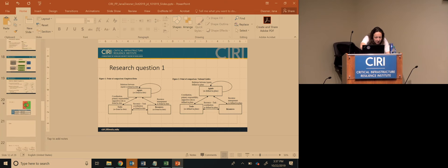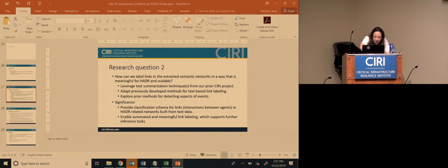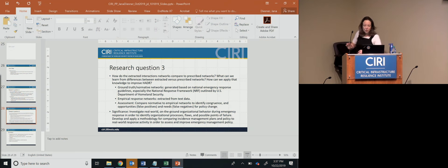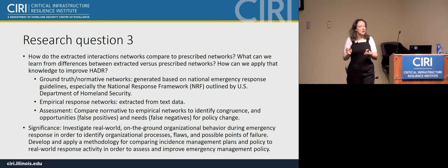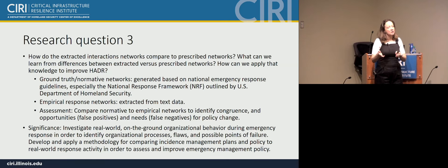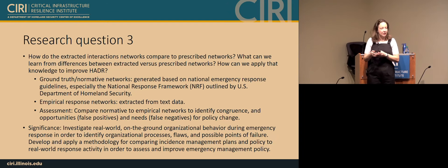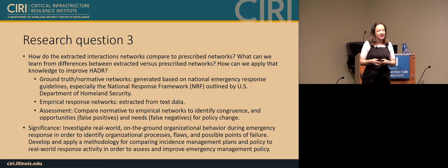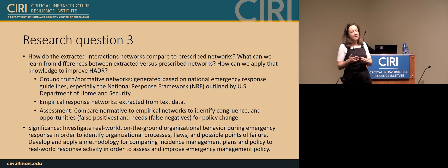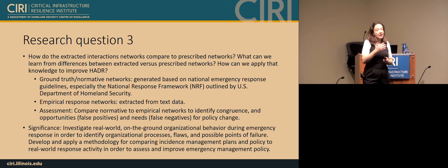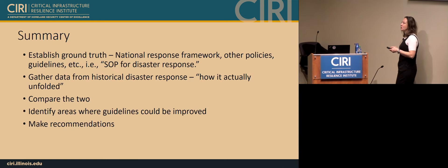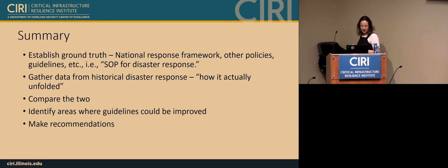Once we have our correct graphs and links, the last step is to do graph comparisons — comparing our empirically retrieved networks with given policy information representing these network structures. How much do they overlap? Additional empirical findings not in policy could be considered for policy enhancement. Things prescribed by policy but absent from our data could be considered for policy revision to align policy with the reality of response over time.